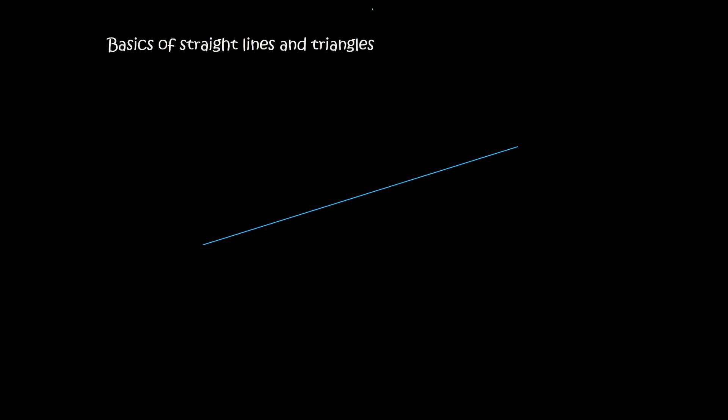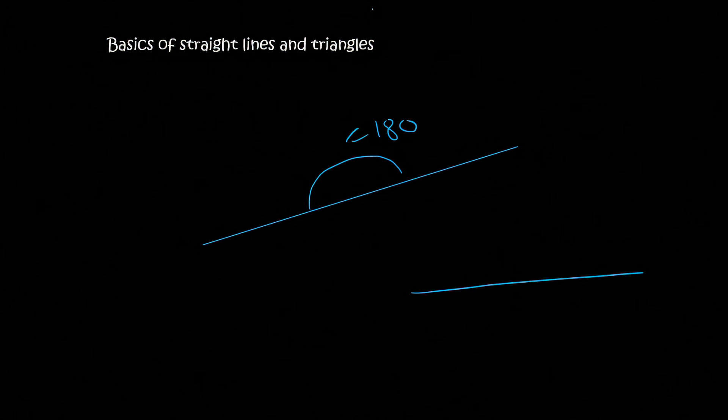So here we have a straight line. The first thing we need to know is that the angles on a straight line will always add up to 180. So what that means is that if I have a straight line here,